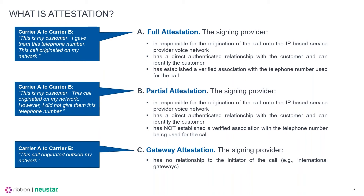We mentioned the A, B, and C attestation levels. The concern here is that, depending on how these attestations are applied, you start to potentially define different tiers of credibility of originating providers that may fall into certain use cases. So let's tee that up.